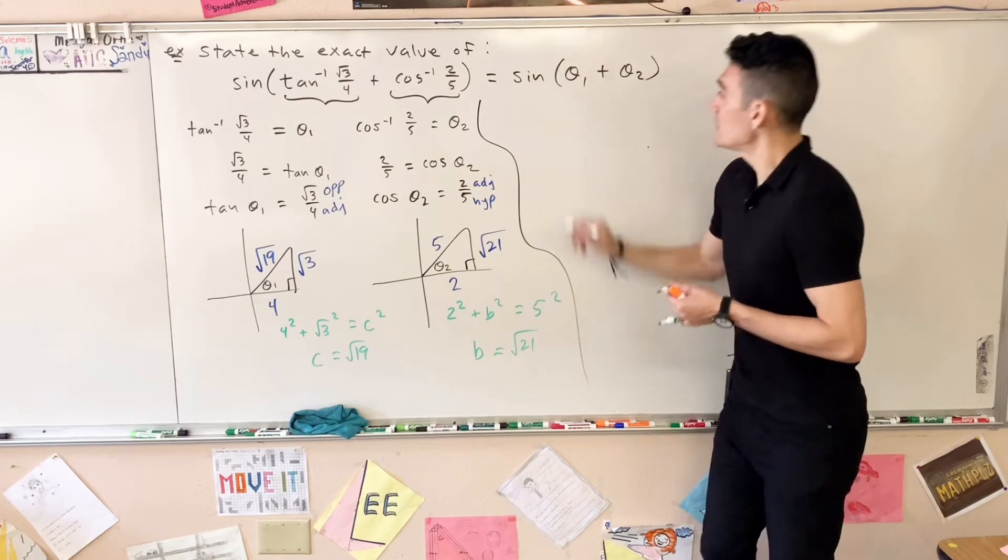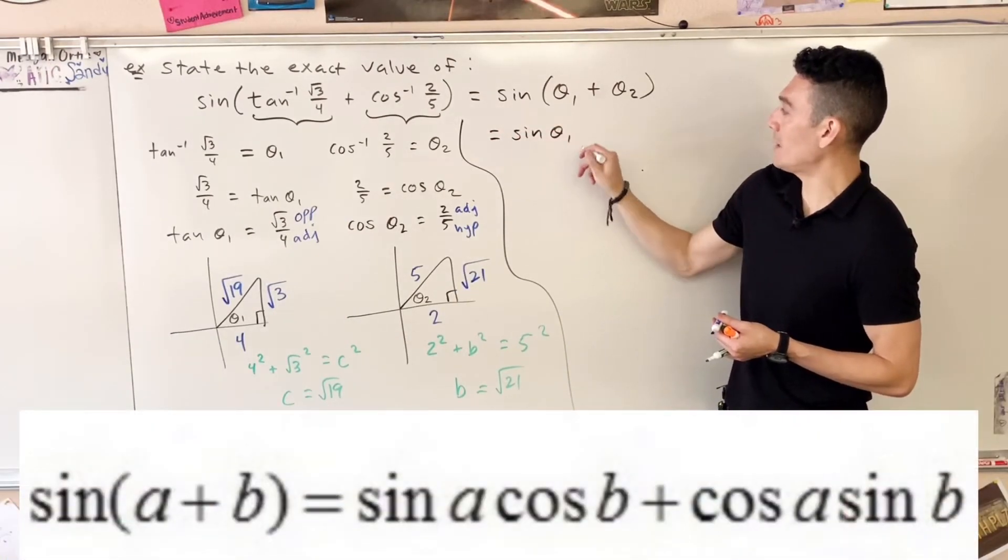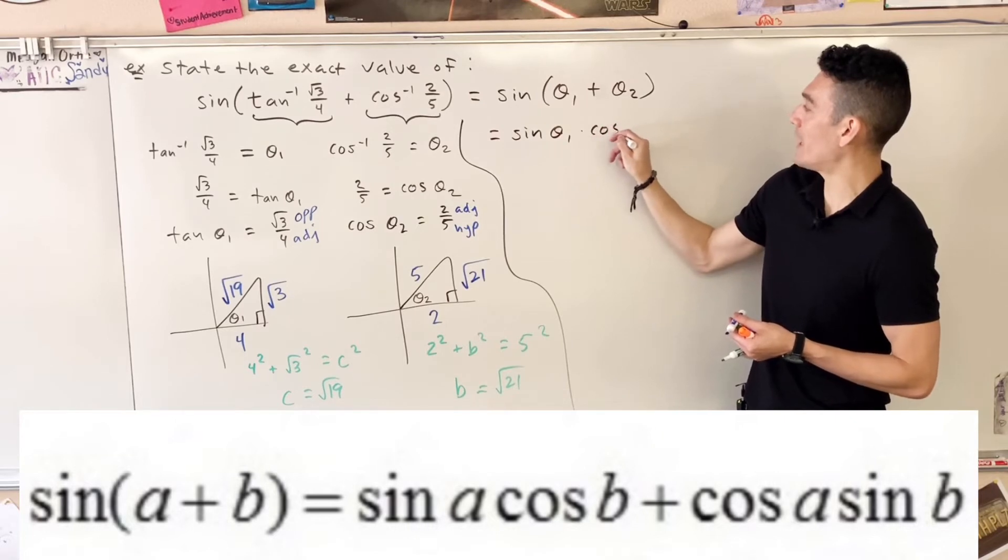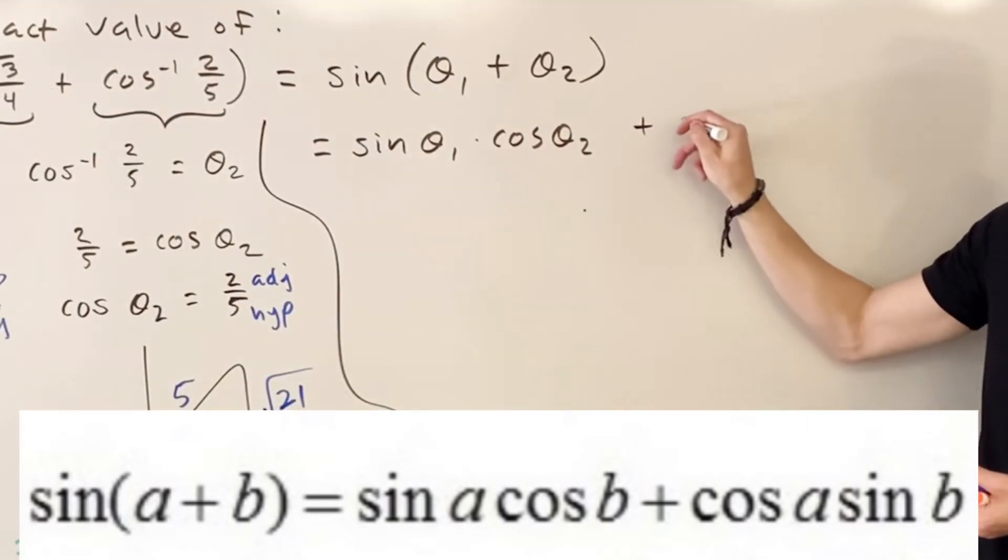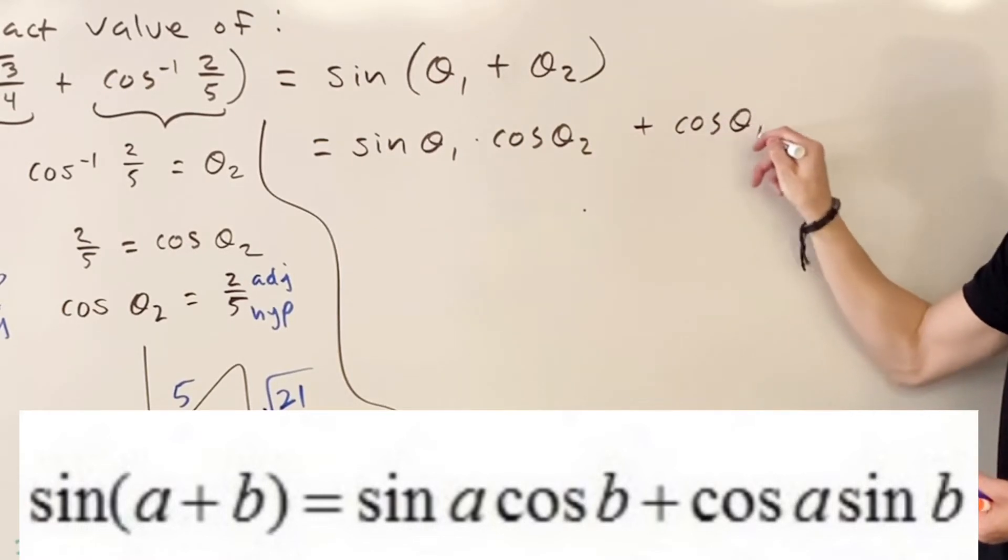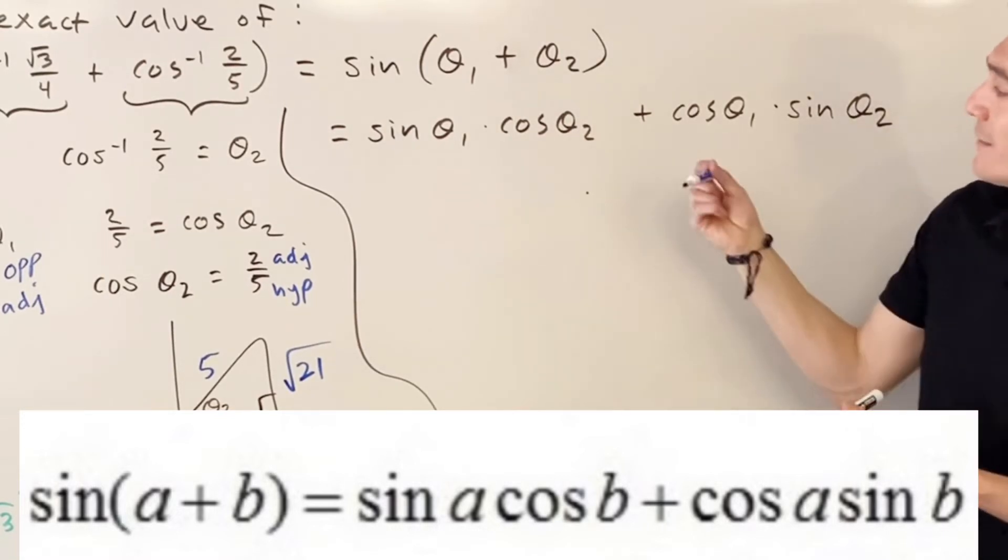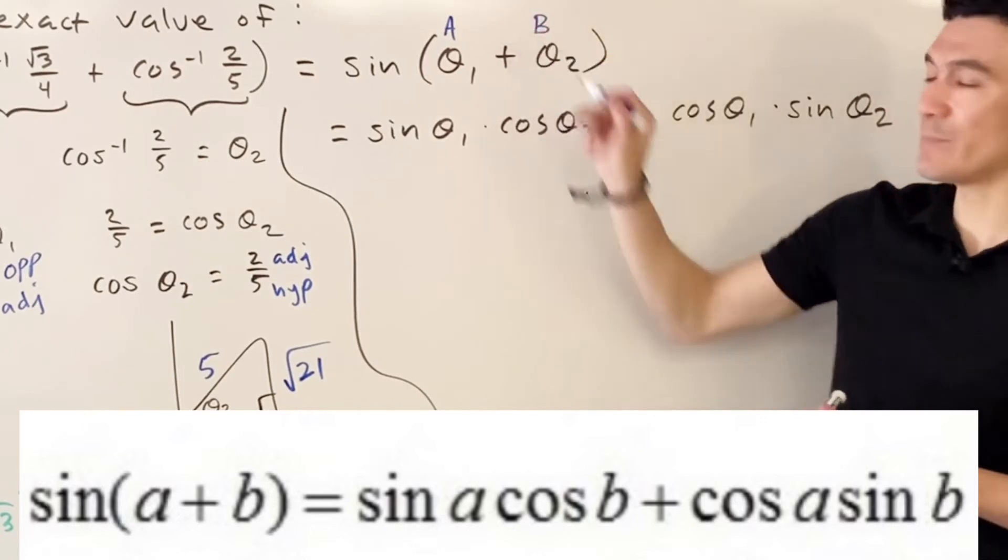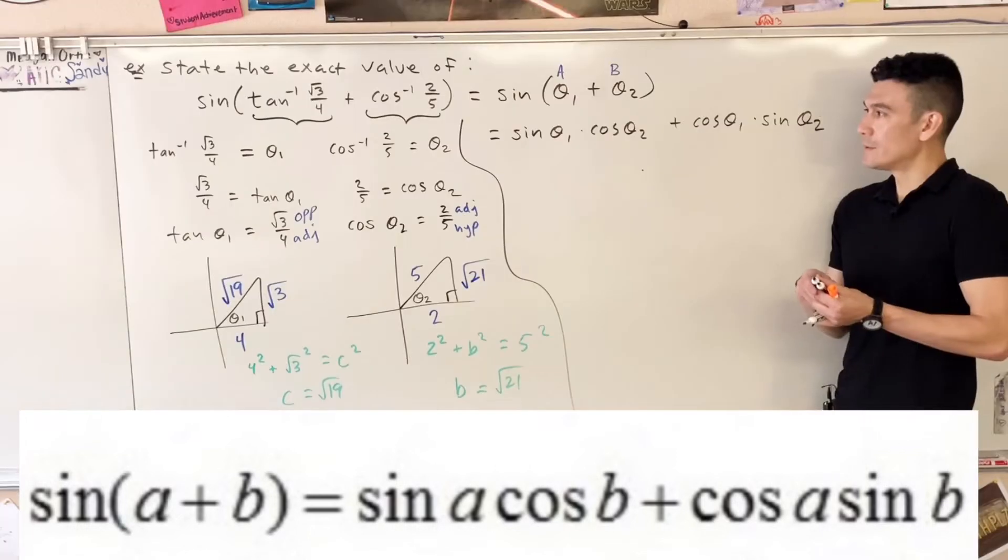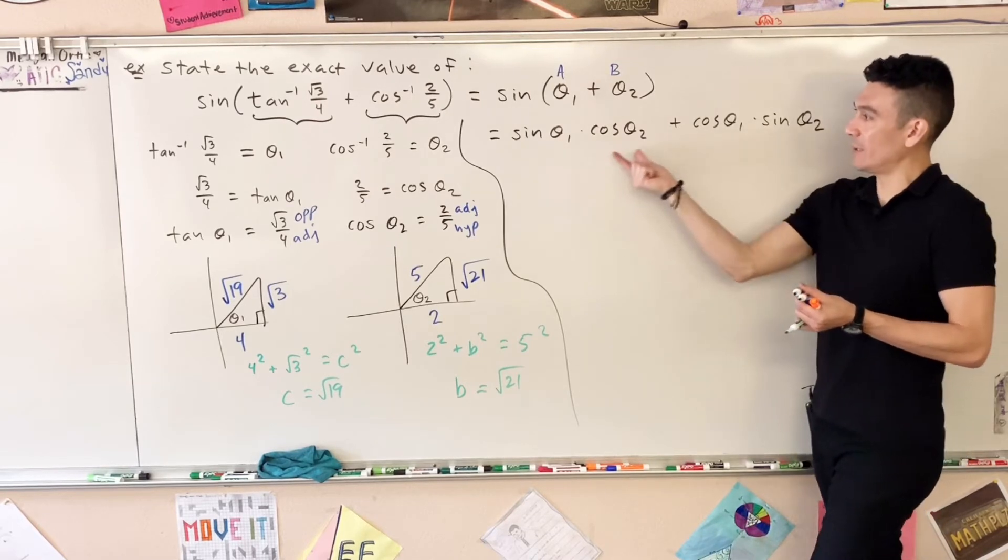So according to that identity, here is what this becomes: this equals sine of theta one times cosine theta two plus cosine theta one times sine of theta two, because it's kind of like this was playing the role of a and this was playing the role of b.